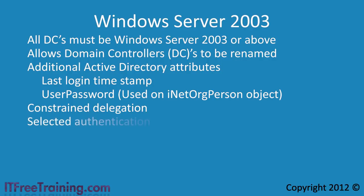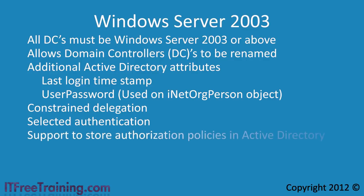The next feature is selective authentication. This allows you to specify the users and groups from a trusted forest who are allowed to access resources, giving you more control when working with multiple forests. The last feature that Windows Server 2003 domain functional level adds is support to store Authorization Manager policies in the Active Directory database. Authorization Manager is a flexible framework for integrating access controls into applications.